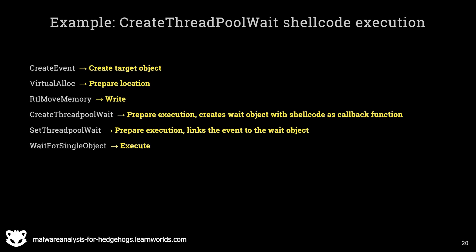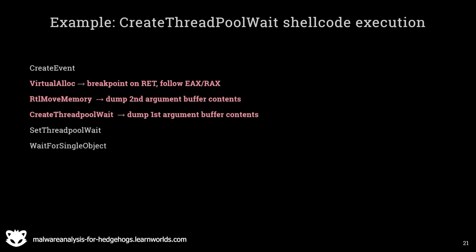Knowing this, where can we place our breakpoints? First, we can again place one on VirtualAlloc — this time it's VirtualAlloc instead of VirtualAllocEx, but the principle is the same: place it on the return and follow the address in the return value. Second, RtlMoveMemory can be used, and we can directly dump the buffer contents which are in the second argument. Third, CreateThreadpoolWait has buffer contents in its first argument that we can dump.